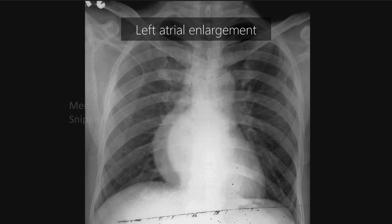Usually, the left atrial appendage is not seen in the chest X-ray. When it is enlarged, it is seen as a convexity below the pulmonary artery shadow.